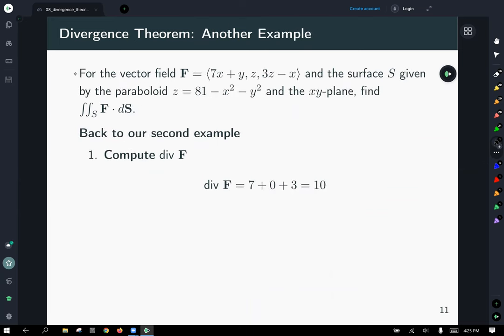So returning to our second example here, same setup. Let's just apply this method. Let's calculate the divergence. Taking the partial with respect to x, applying it to the x component function, 7x plus y gives you the partial derivative of 7, applying the partial derivative of y to the y component. So the partial derivative of z with respect to y is 0. And last but not least, the partial derivative of our z component function, 3z minus x, with respect to z is going to be just 3. Add together 7 and 3, and you've got the divergence of this vector field as 10.